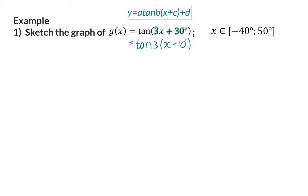This time, however, the period will become three times smaller, and that means these steps of 45 will also become three times smaller. Therefore, I'm going to divide the 45 by 3, and that means every 15 degrees we will now find an important coordinate.